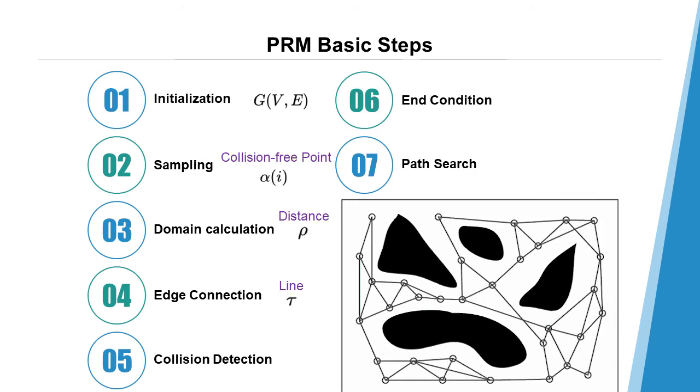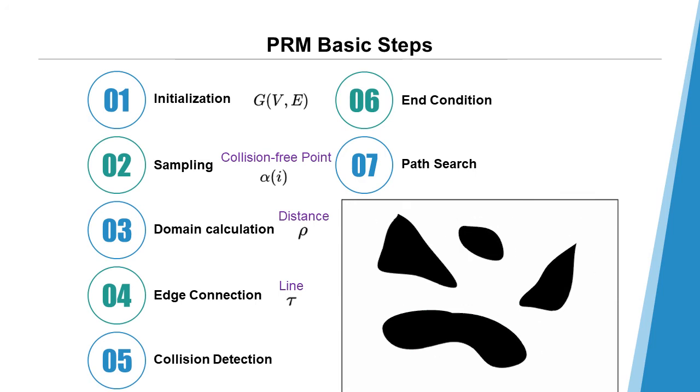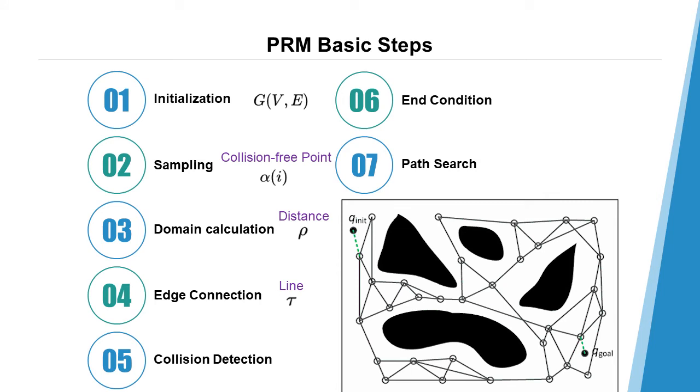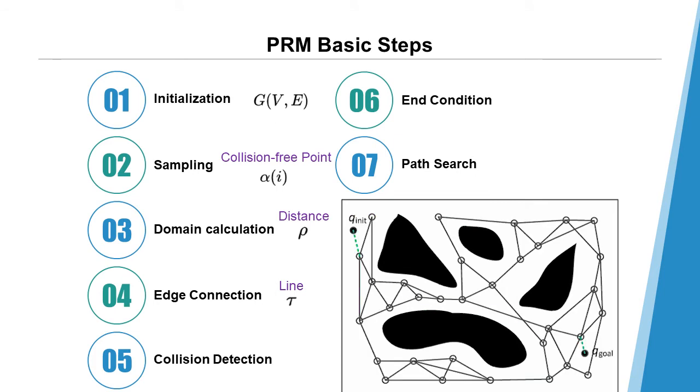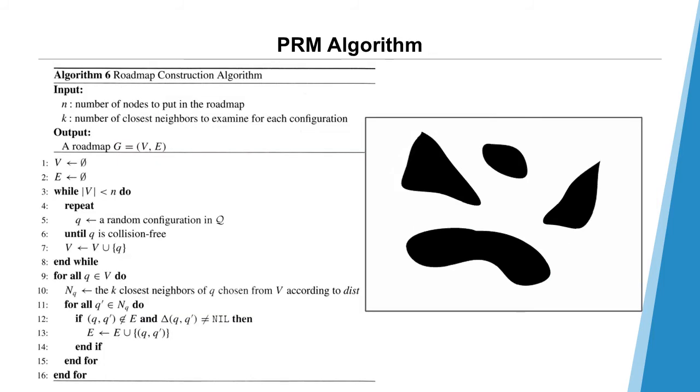And the final step seven, if all the steps above are finished, we use graph search algorithm in the undirected graph G to find if there exists a path from the initial position to the destination. And if there exists one, then we find the path. This page shows how the algorithm works.